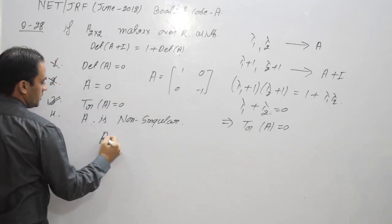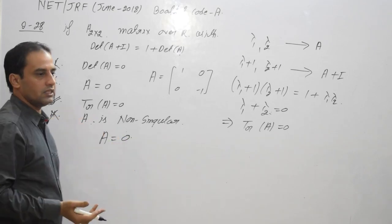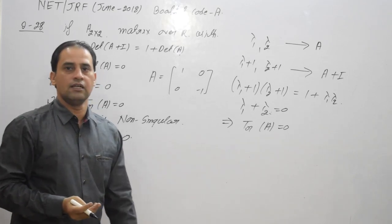For D option, you can take a zero matrix. So D option or fourth option is incorrect. So answer is third option.